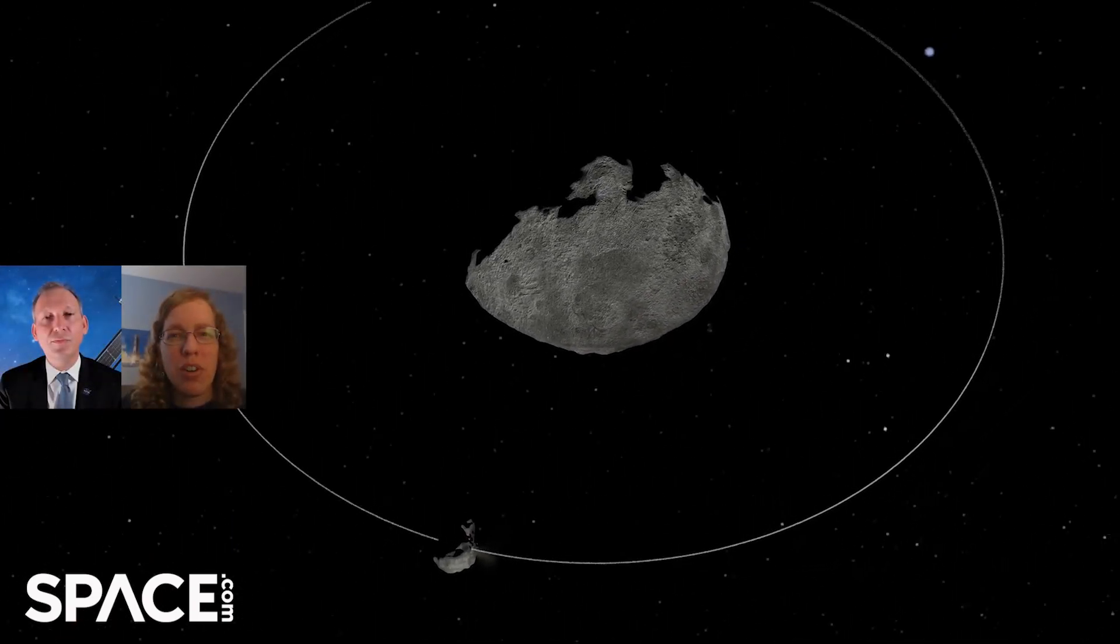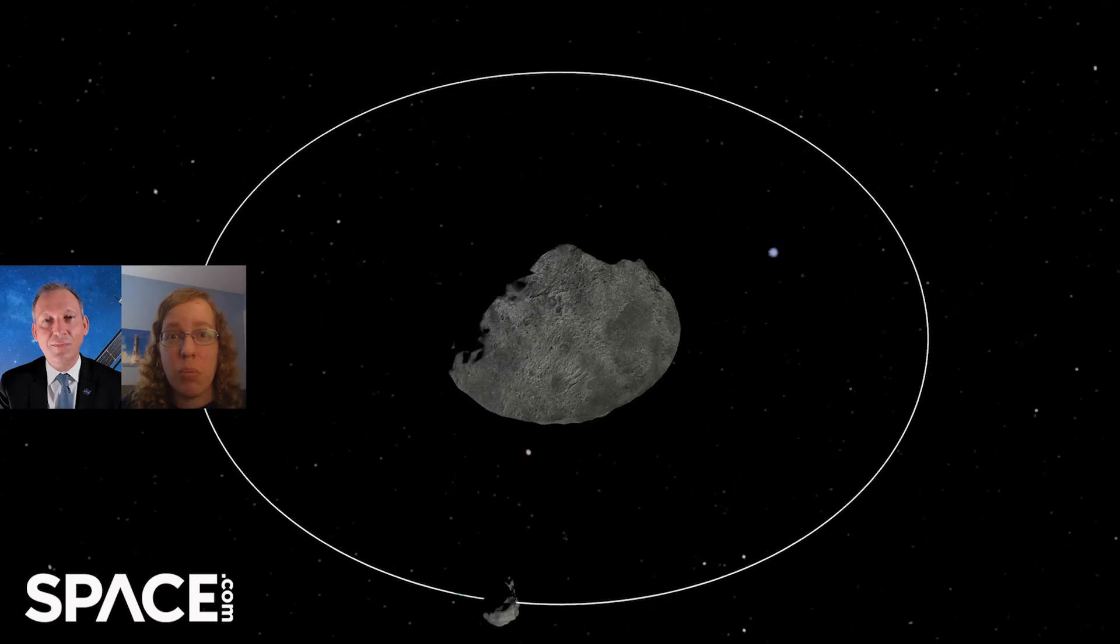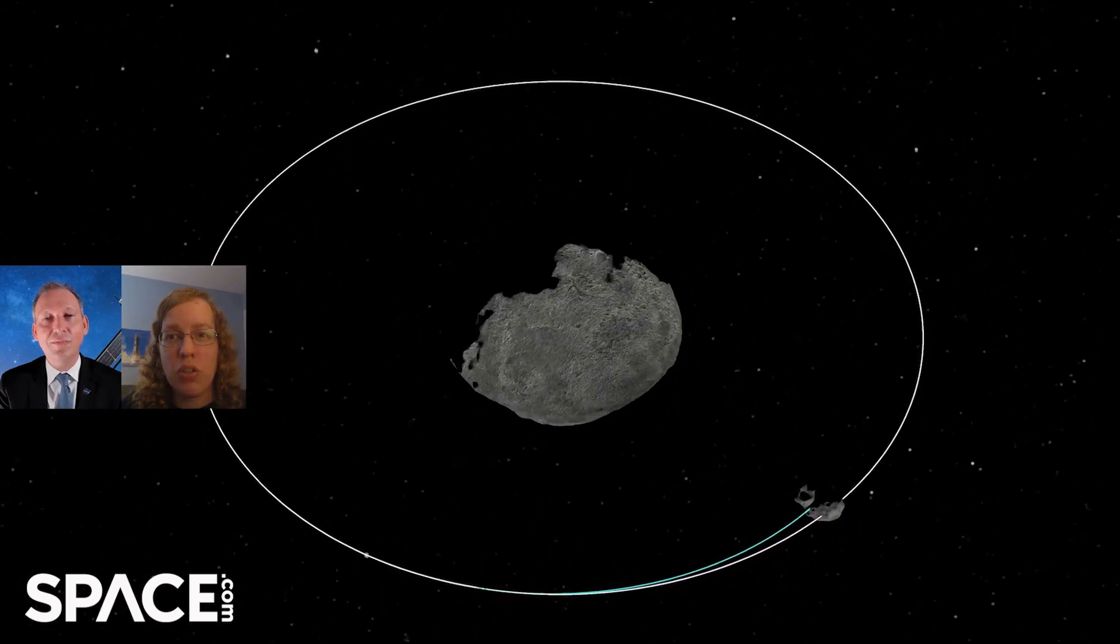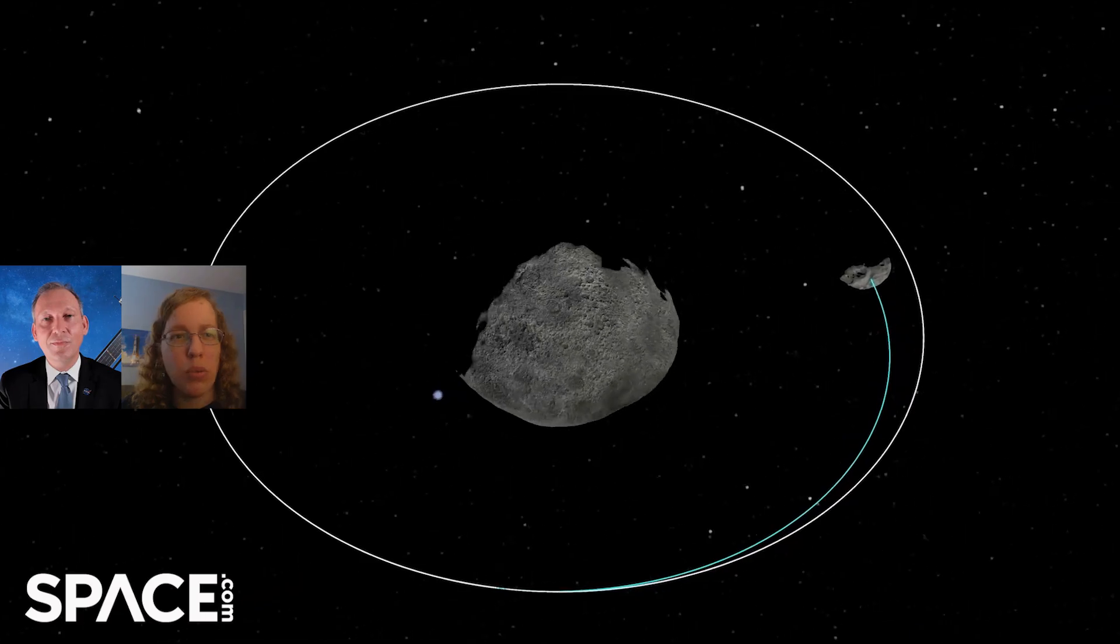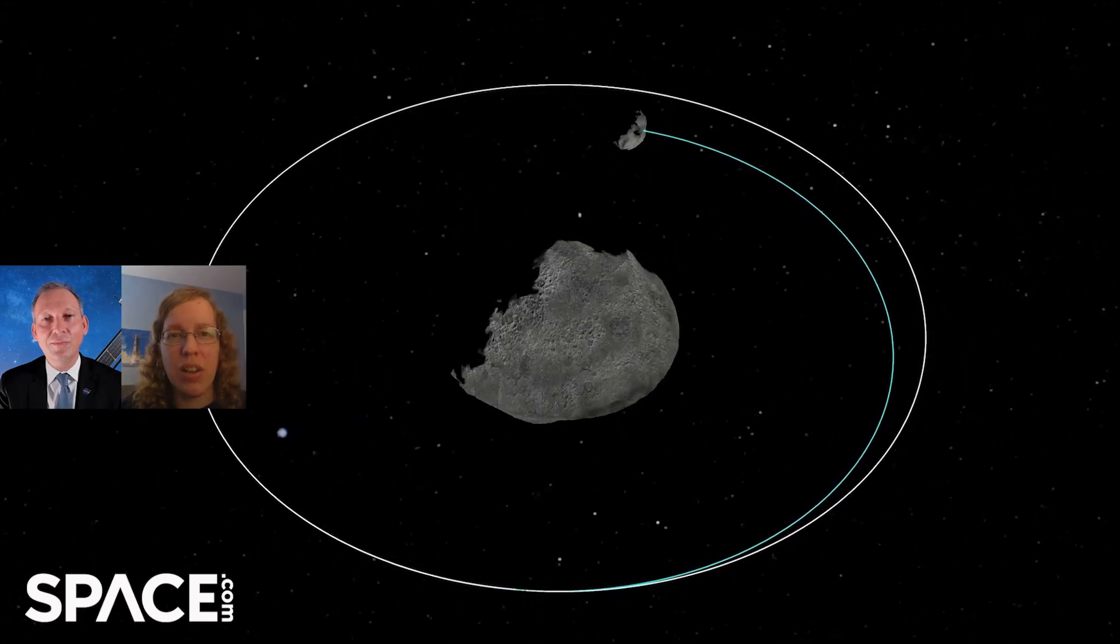Welcome everybody. A spacecraft called DART is planning an ambitious mission to crash into an asteroid. And to learn more, we're talking with Thomas Zurbuchen, Head of Science at NASA. So why was this asteroid system chosen for the mission?